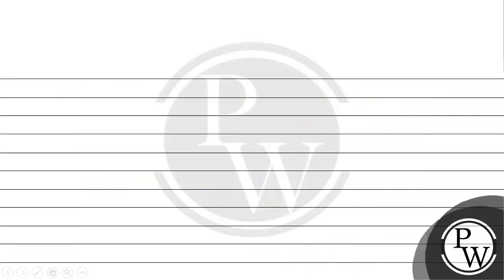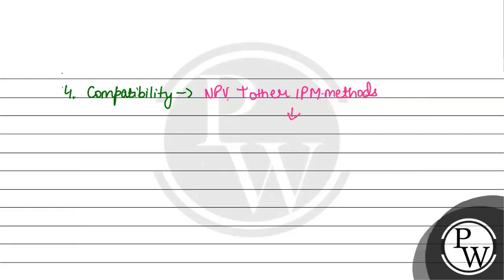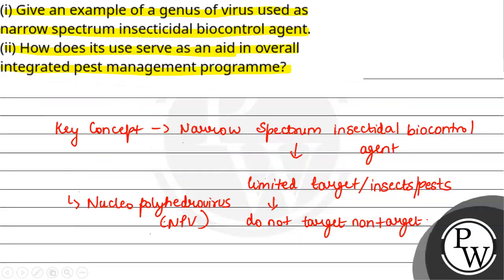Next, let's talk about compatibility — our fourth point. These methods are compatible with the rest of the IPM methods. NPVs can be used along with other IPM methods, and this will improve the overall efficacy. Because NPVs do not harm other non-target species, they are compatible with the rest of the methods. Therefore, this is the answer for the given question.